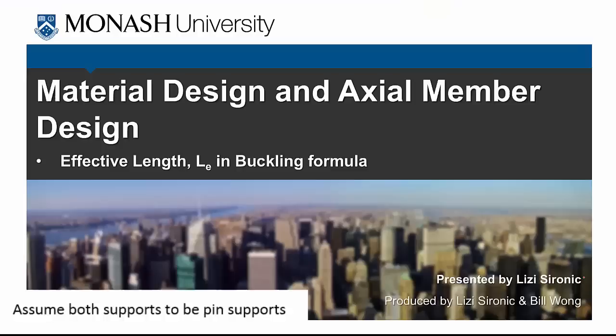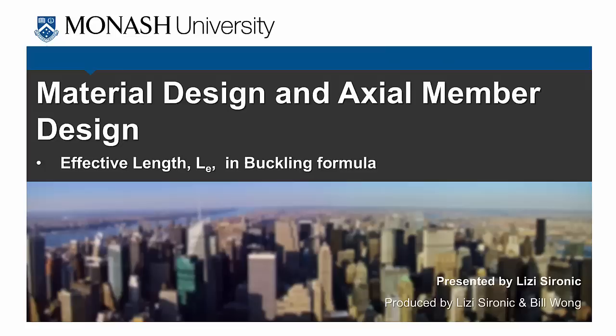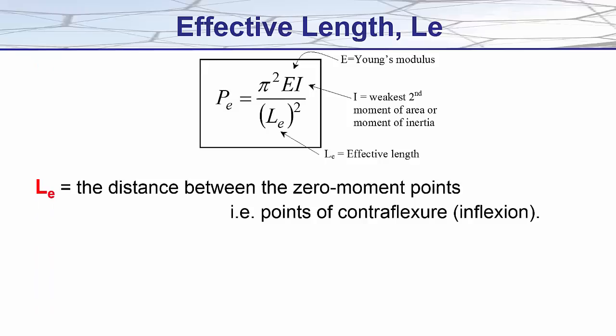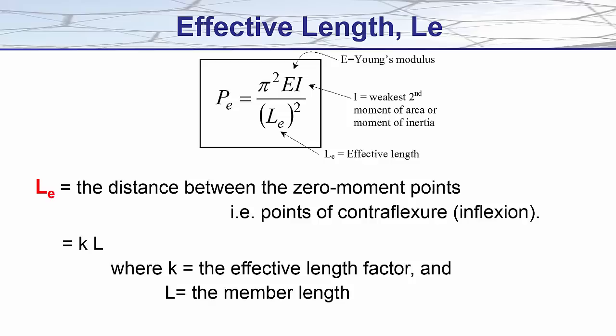Up until now in our buckling formula we have taken the effective length term as being equal to the actual member length, and this is not always the case. The effective length is defined as being equal to the distance between zero moment points or points of contraflexure or inflection, but more commonly the effective length is quoted as being equal to KL where K is the effective length factor and L the member length. And the value of K and the effective length itself is directly related to the member end restraints.